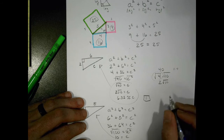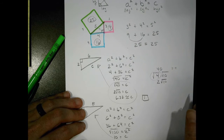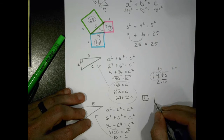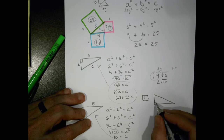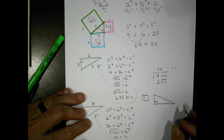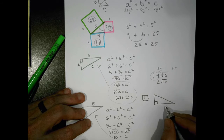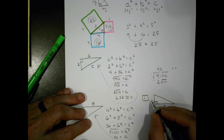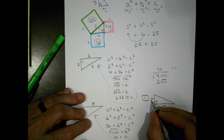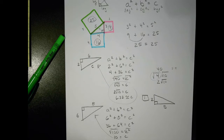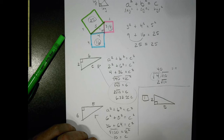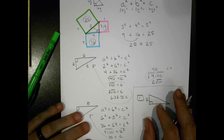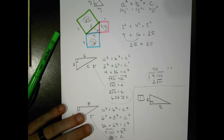Let's take a look at one for you to try on your own. Here's a right triangle with a base of five and a height of two. Go ahead and give that a try. I'm going to press pause and let you do that, and we'll come back and check it together in just a second.